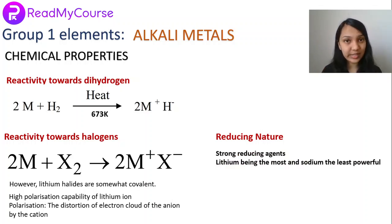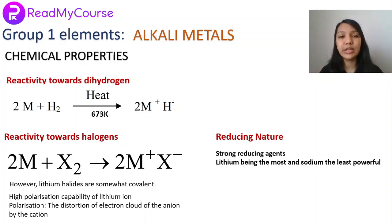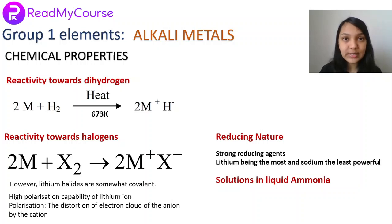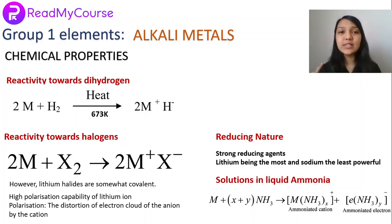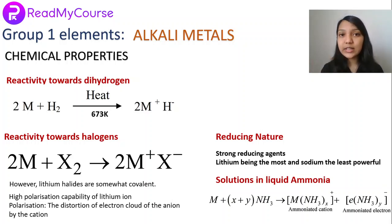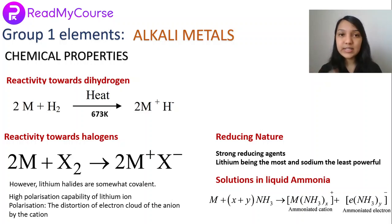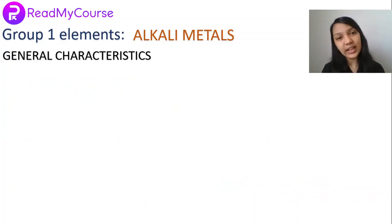All alkali metals are strong reducing agents. Lithium is the most powerful reducing agent and sodium is the least among the alkali metals. When alkali metals are dissolved in liquid ammonia, they form ammoniated cations and ammoniated electrons, producing a blue-colored conducting solution. The ammoniated electron absorbs energy in the visible region and emits blue color, giving the solution its conductivity.